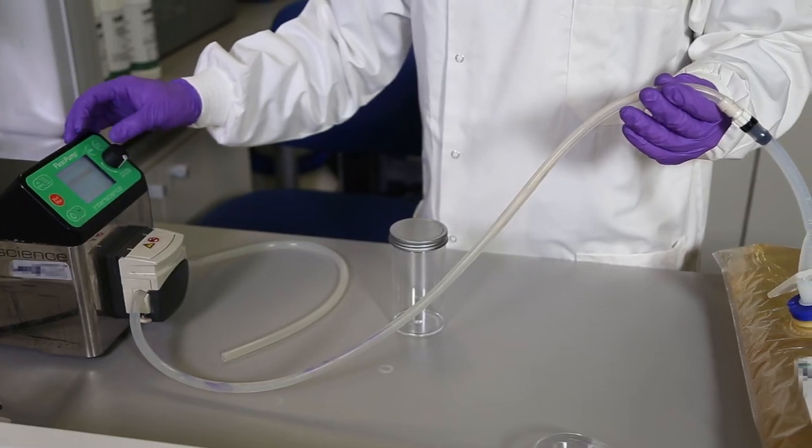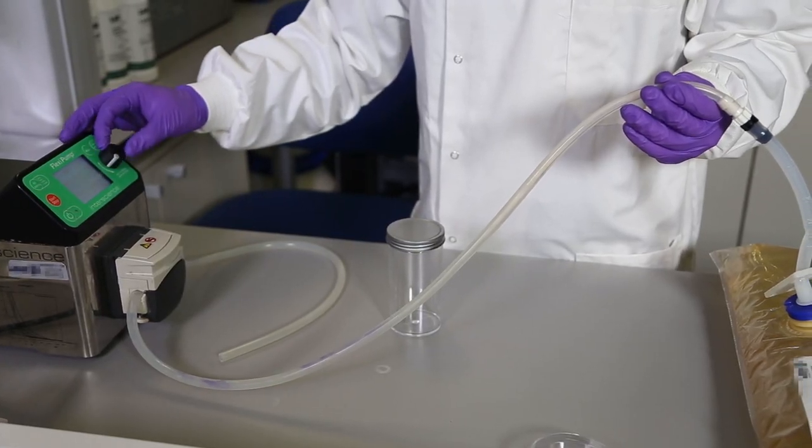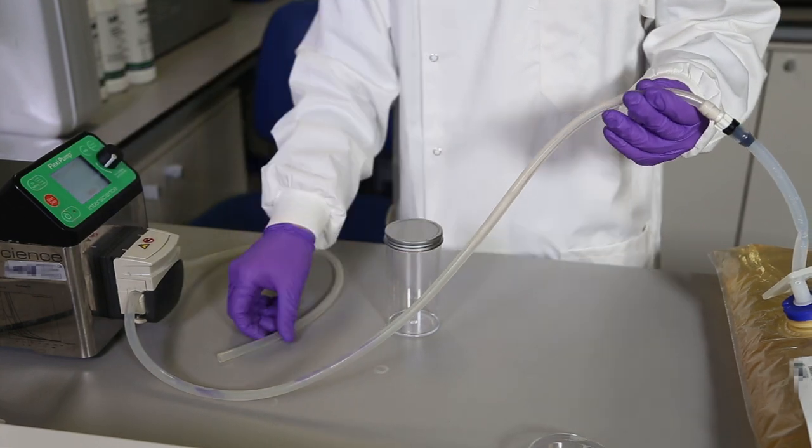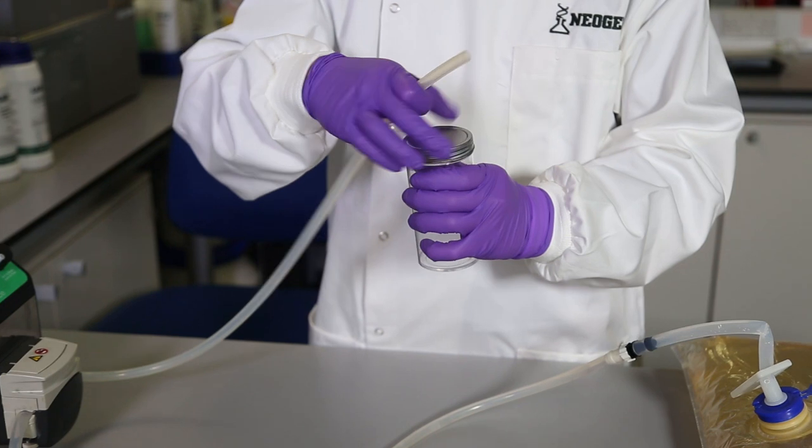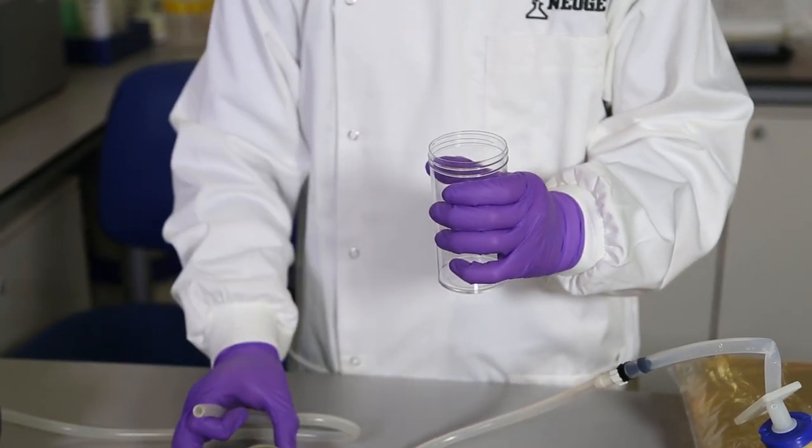Then activate the peristaltic pump, set to pump in the opposite direction from filling, and prime the dispensing line. The bag may now be used to dispense the required volume.